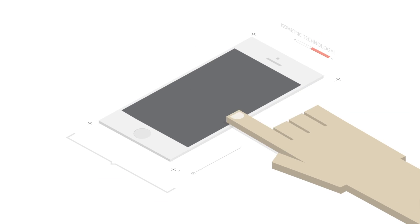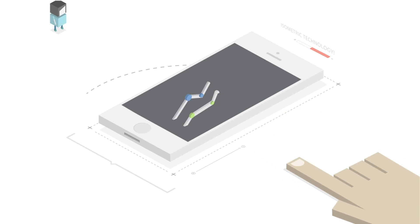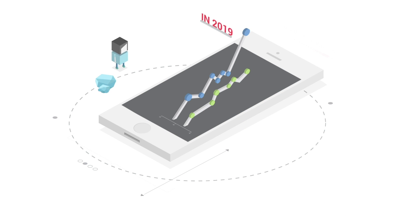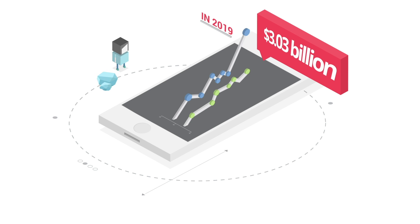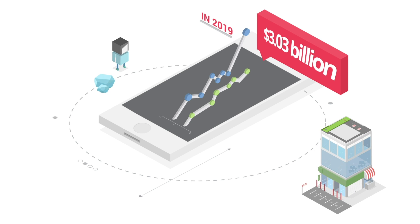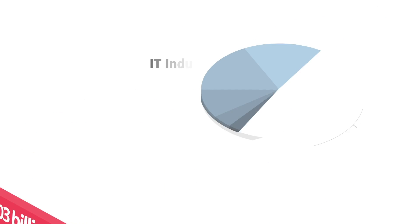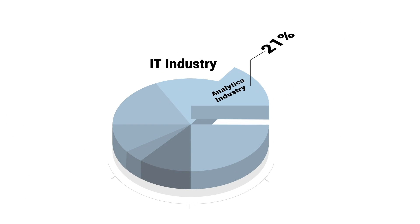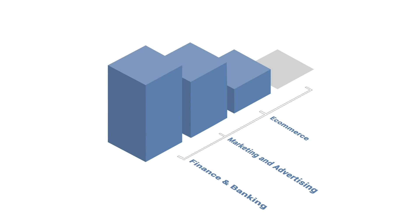So why is data science and the analytics industry growing so rapidly? In 2019, the analytics industry grew to 3.03 billion dollars in size and is expected to double by 2025. Overall, the analytics industry currently accounts for almost 21% of the whole IT industry in India. If you look at the adoption of data science in different industries, you would see that finance and banking contributes to most of it.